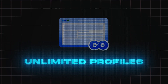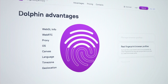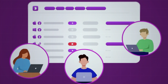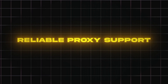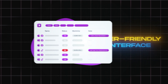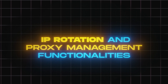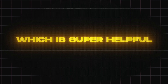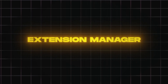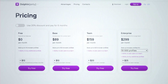Benefits of Dolphin{anty}: unlimited profiles — create as many as you need without limits. Advanced fingerprint masking using the latest technology to keep your identity hidden. Powerful device spoofing, making your computer or phone look like a different device to ad platforms and social media sites. Reliable proxy support with all major proxy providers. Easy-to-use interface, even for beginners, with the ability to assign statuses or notes to each browser profile, built-in IP rotation, and proxy management. Reliable customer support. Extension manager allowing users to start and stop profiles, install extensions, and manage proxies and cookies in bulk. Their pricing is the most competitive in the market.